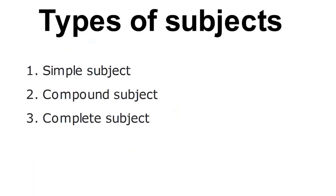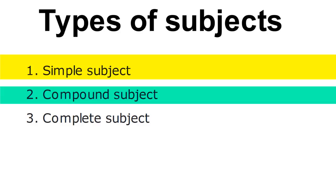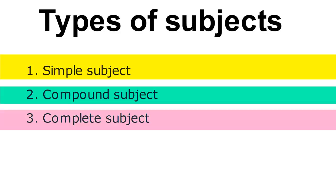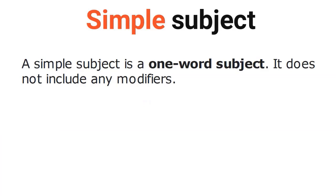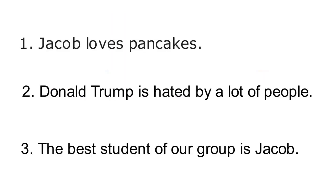Now we have three different types of subjects in a sentence: number one, simple subject; number two, compound subject; and number three, complete subject. Let's master all three types one by one. A simple subject is a one-word subject — it does not have any modifiers. It is generally a single-word noun or pronoun. It can be more than one word but would not have any modifier in it.